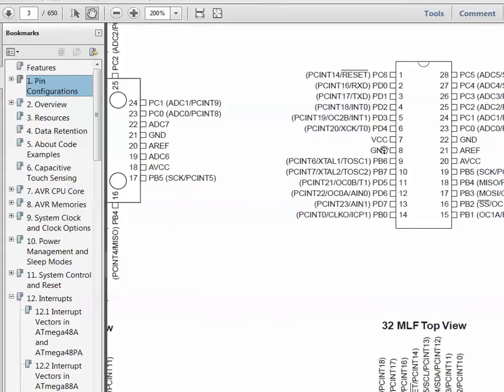You can see here that port D pin 2 and port D pin 3 have the functions INT0 and INT1. So these are the two pins that are used for external interrupts.